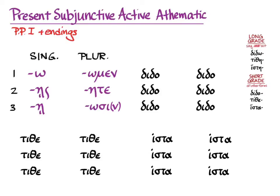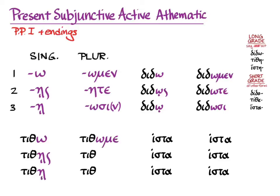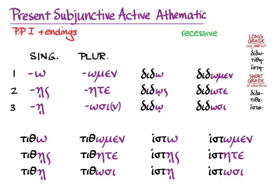Didomi will act like an omicron contract verb, and tithemi will act like an epsilon contract verb. When we put in the recessive accent following contract verb rules, the accents will look familiar, and the only real difference in how they look is where the accent falls.